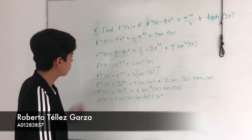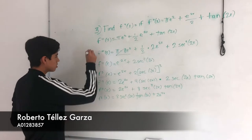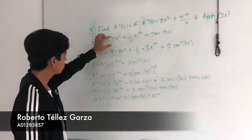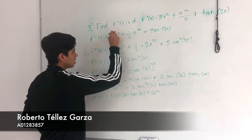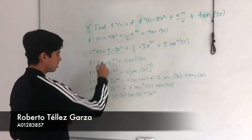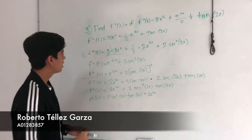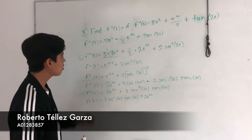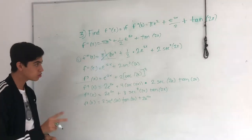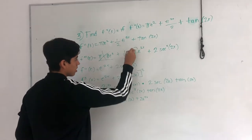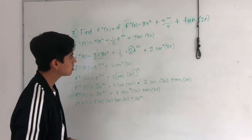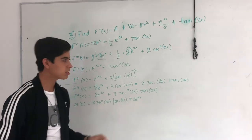The first step is to differentiate. When you have a whole number, you cancel it out. Here, you have to differentiate 2x — the derivative of 2x is 2 — and we pass it right here. Then you have to differentiate the tan, and the rule says when you have tan, you write secant.